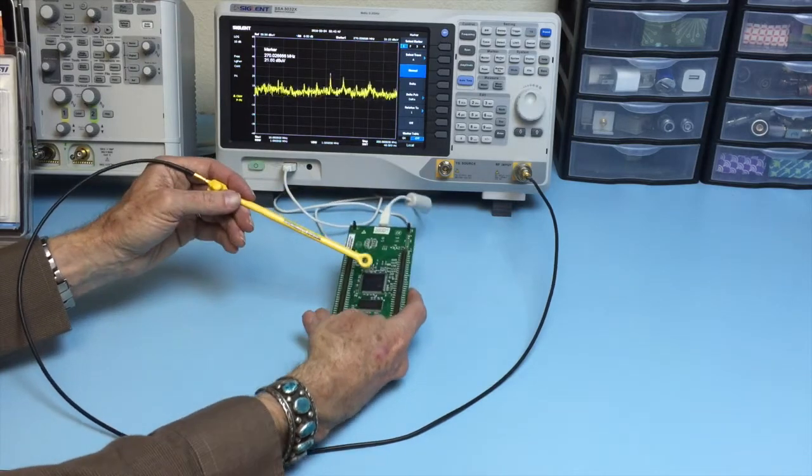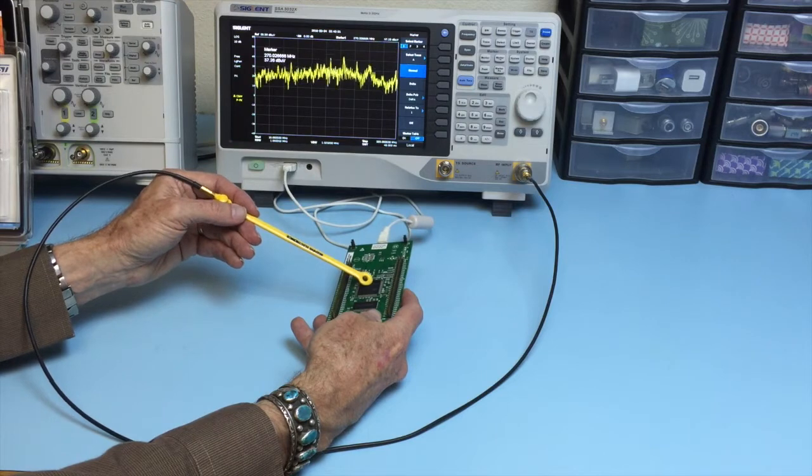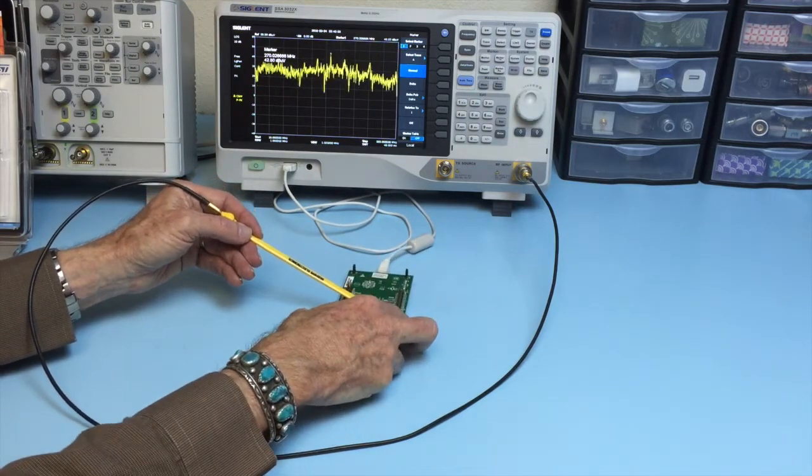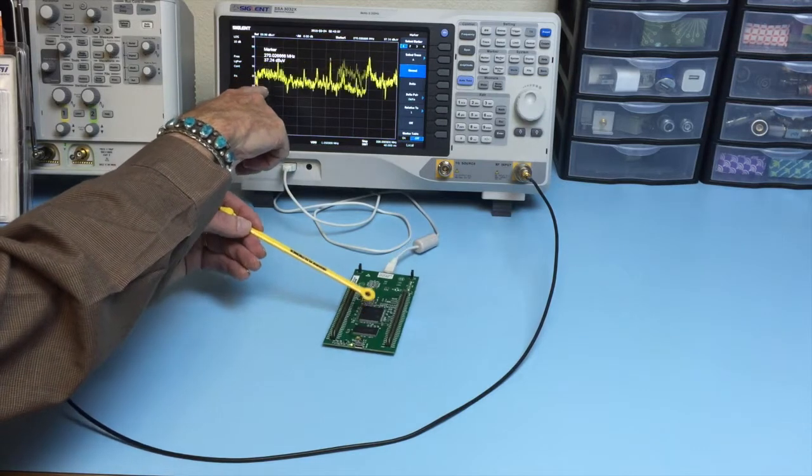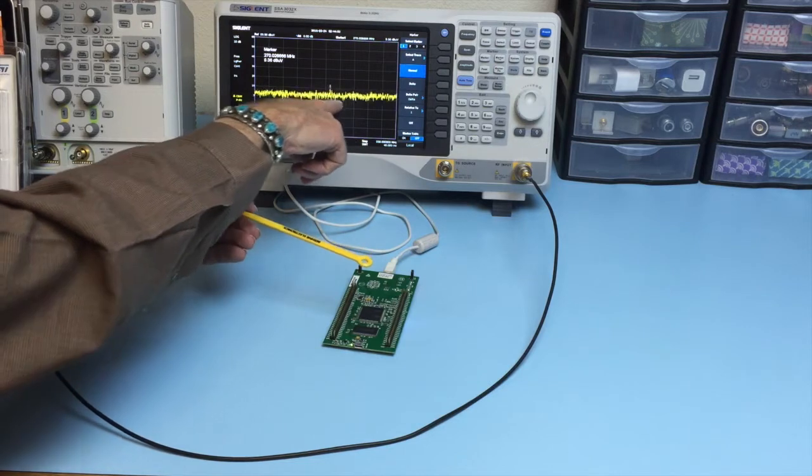We can flip the board over and probe some of the main processor chips. Now you can see here we've got a combination of broadband. See, here's the noise level in the ambient state.